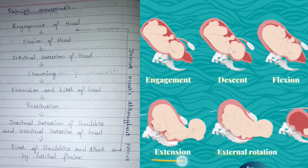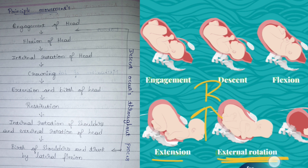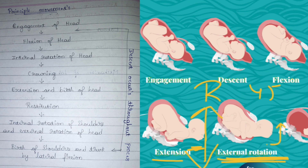Between extension and external rotation there is one step known as restitution. Restitution is similar to external rotation — it is the rotation of the head by 45 degrees. As you can see, in one step the head is in one position, and in the next step the head's position has changed. The rotation of the head in between is known as restitution.